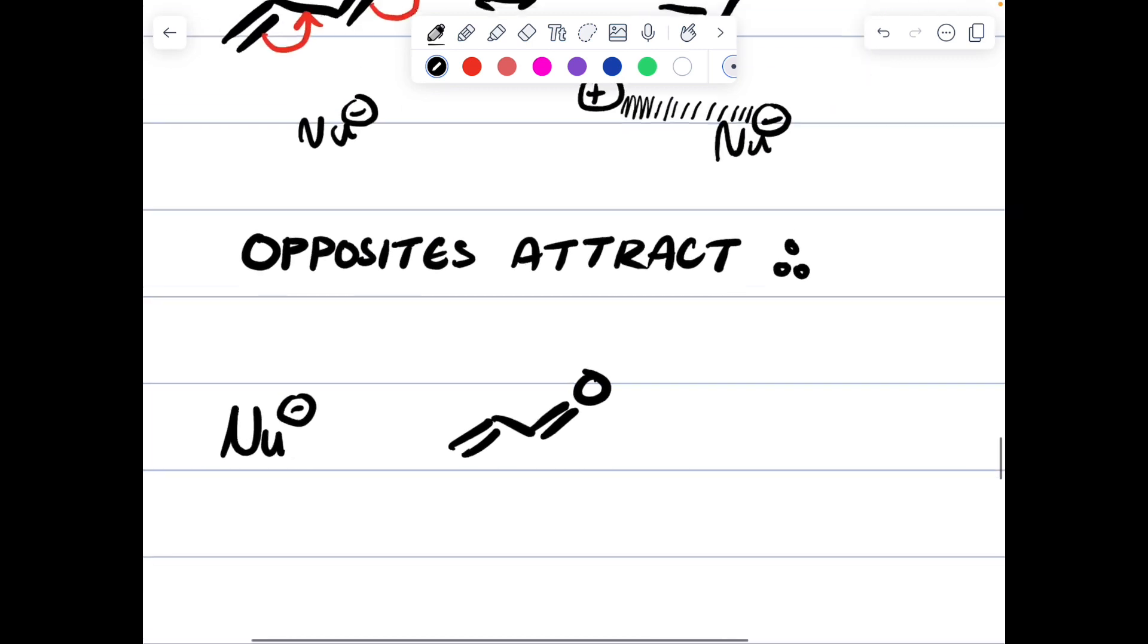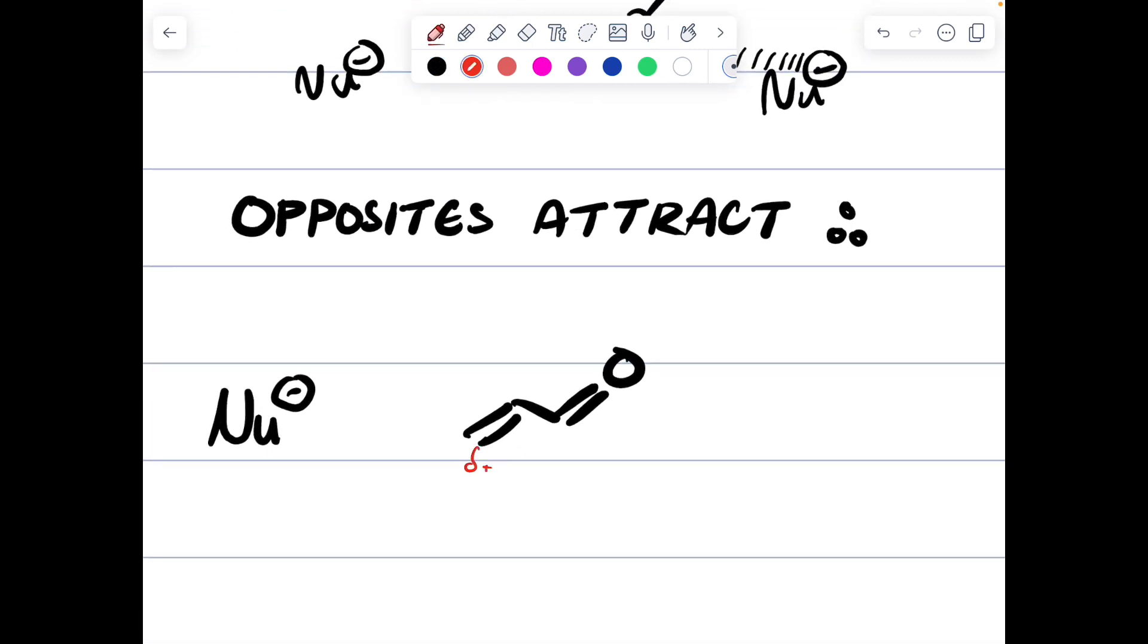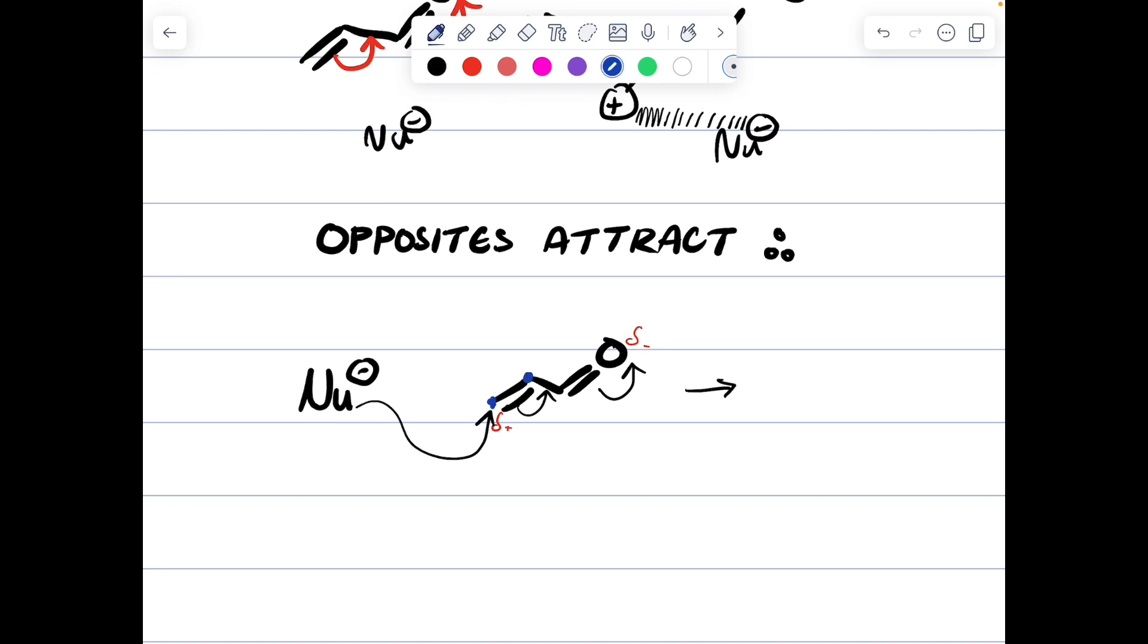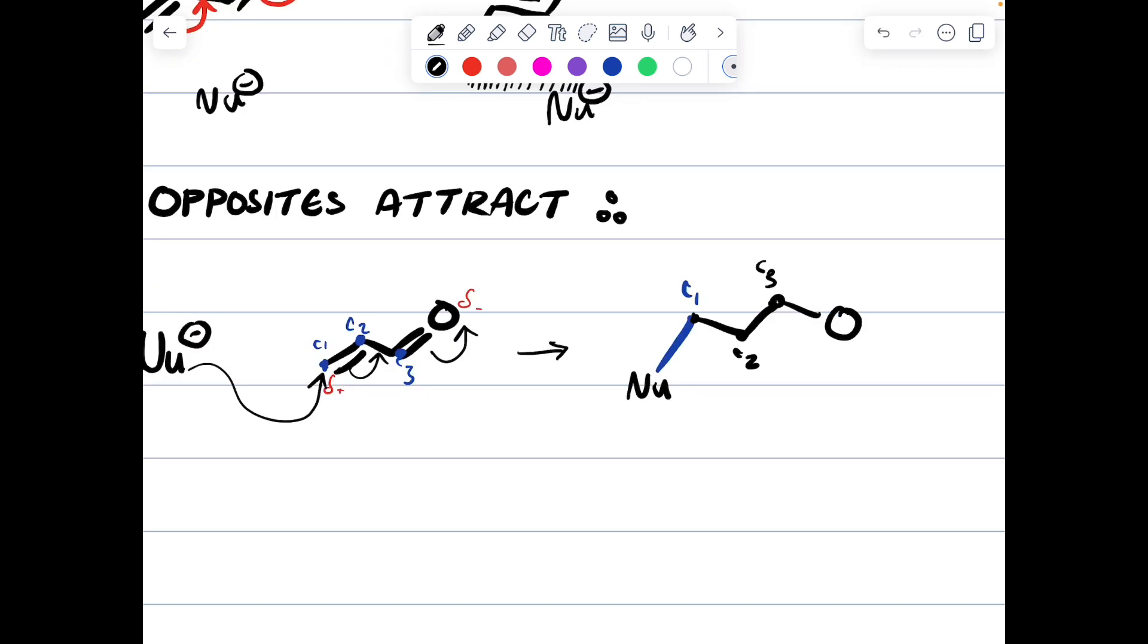So when this nucleophile sees this structure, it actually sees a delta plus, delta minus. So it will attack the plus, two in, two over, two up. Label all your carbons, C1, C2, C3. An arrow was drawn towards carbon one, hence a bond was made between the nucleophile and carbon number one. And carbon number one is still bonded to carbon number two, which is still bonded to carbon number three. And carbon number three is still bonded to an oxygen, two and carbon three. And a negative charge now resides on the oxygen.